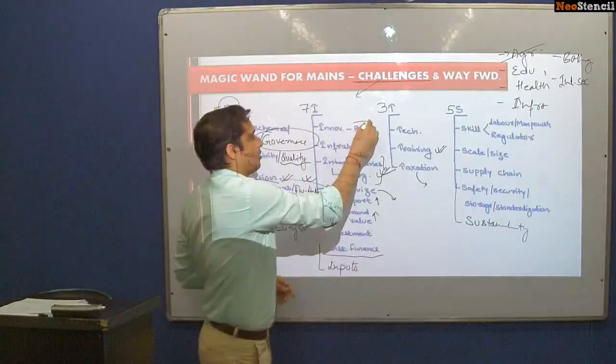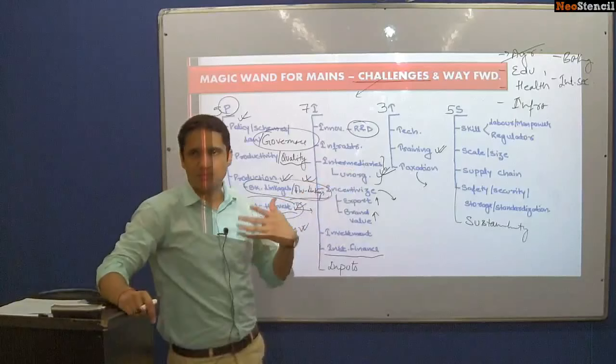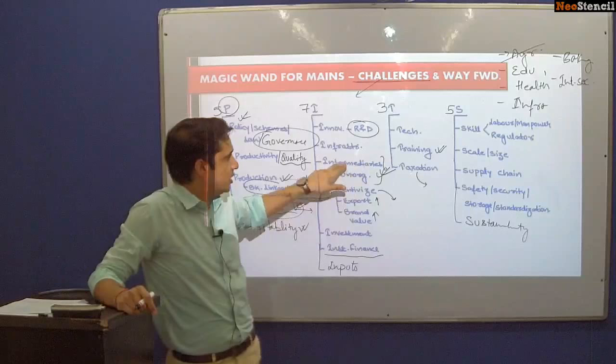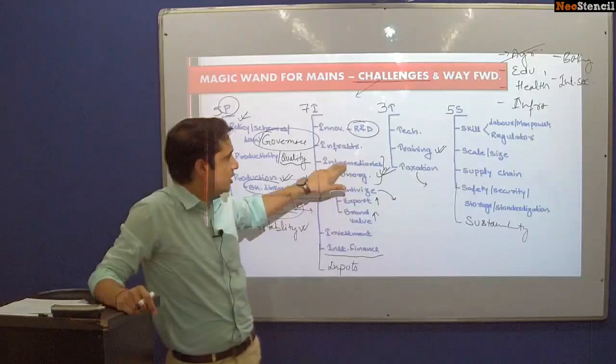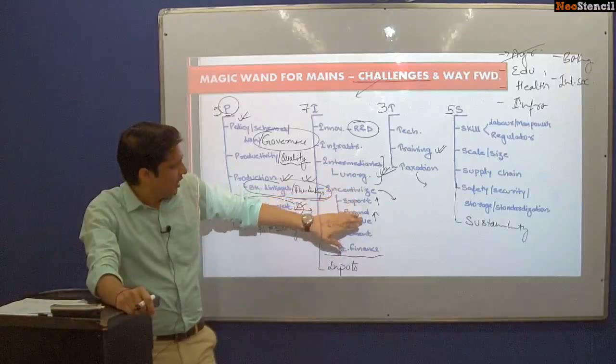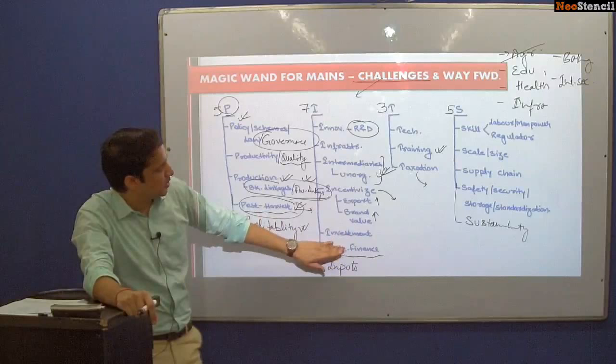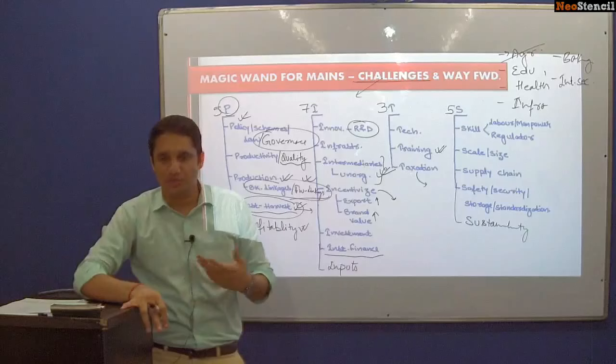R&D is a major problem in internal security. Infrastructure is a major problem — latest technology is not available. Intermediaries: there is a trust deficit between police and normal citizens. Incentivize: police personnel don't have sufficient incentives and work 15-16 hour shifts — the constabulary nature of Indian police is a problem. Brand value: the derogatory language used by political leaders towards police undermines motivation. Investment: when the 14th Finance Commission devolved 42% to states, the Union government stopped the modernization fund for police forces — it was later resumed but the delay was harmful.